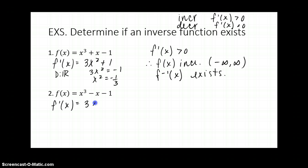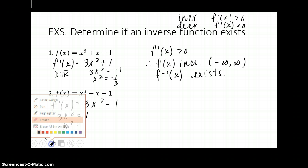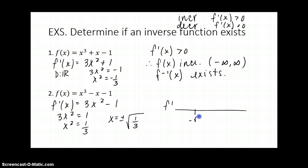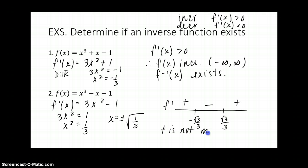For the second function, the derivative using the power rule is 3x² − 1. The domain is all real numbers, so the derivative always exists. Setting the derivative equal to zero and solving for x gives two critical numbers: ±√(1/3), or ±(√3)/3. Testing values on a number line, the derivative is positive to the left of −(√3)/3, negative between the two critical values, and positive again after (√3)/3. So f is not monotonic — it's not strictly increasing or decreasing — and therefore an inverse function does not exist on the entire domain.